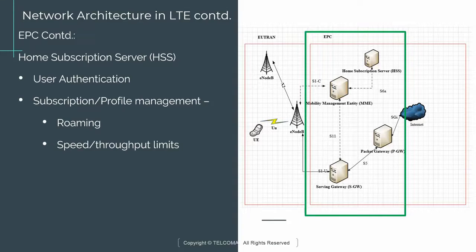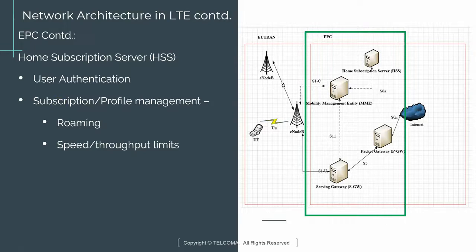The HSS is sort of like a bank — it holds all these keys. If a network element like the MME needs those keys, it goes and retrieves them from the HSS, making it the central place for user authentication. The HSS also manages profiles — a profile is essentially a list of services that the user equipment can access.